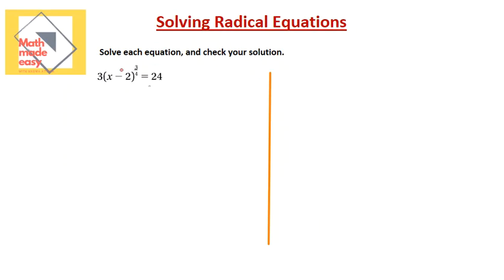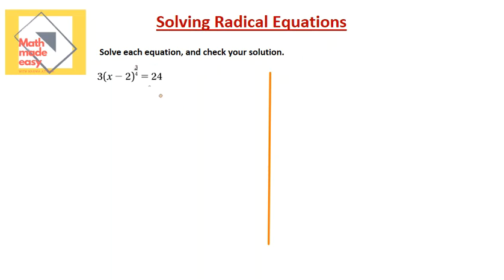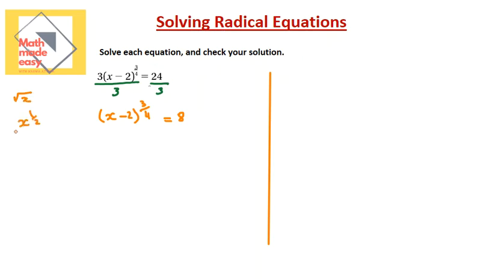This next question is a radical equation written in exponential form. We need to isolate the exponential expression first, just as we isolated the radical before. Dividing the whole equation by 3 on both sides, we get x minus 2 to the power of 3 over 4 equals 8. Now, to get rid of the exponent, recall that square root of x is x to the power of one half, and to undo it we squared — multiplying the exponent by 2 made it 1. We follow the same procedure here, raising both sides to the reciprocal power.